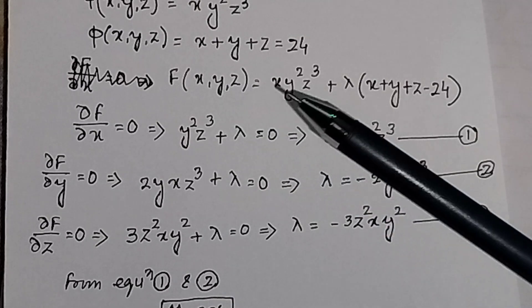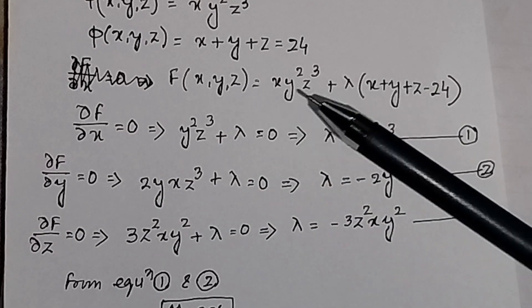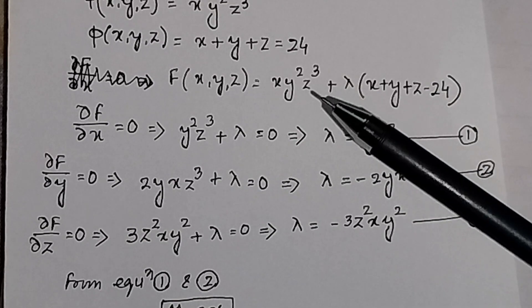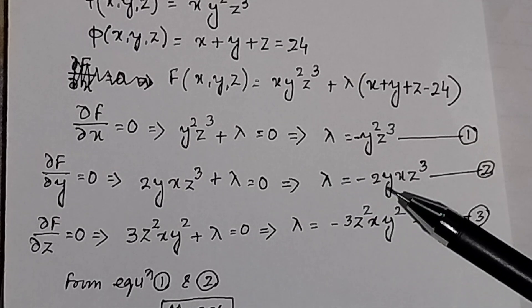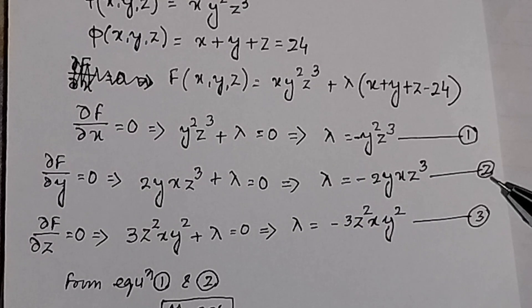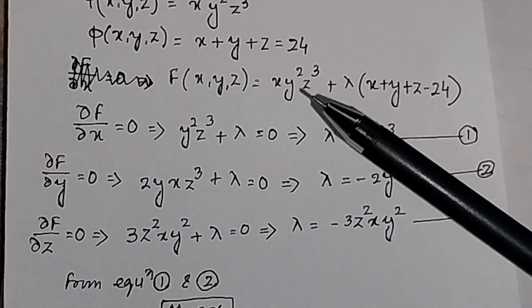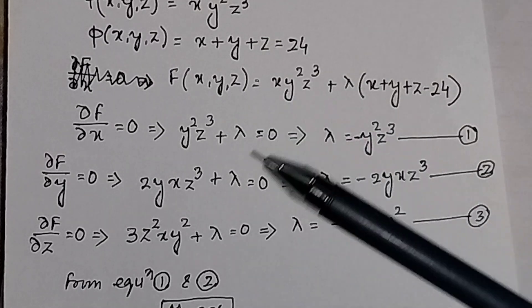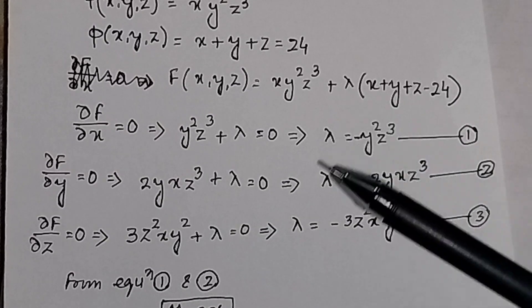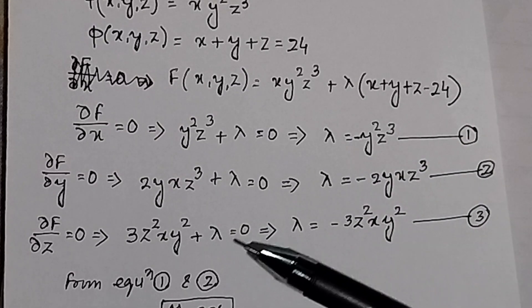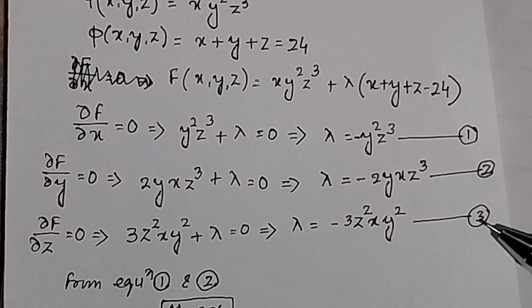Taking the partial derivative with respect to y: 2xy·z³ + λ = 0, so λ = −2xy·z³. Call this equation number 2. Taking the partial derivative with respect to z: 3x·y²·z² + λ = 0, so λ = −3x·y²·z². Call this equation number 3.